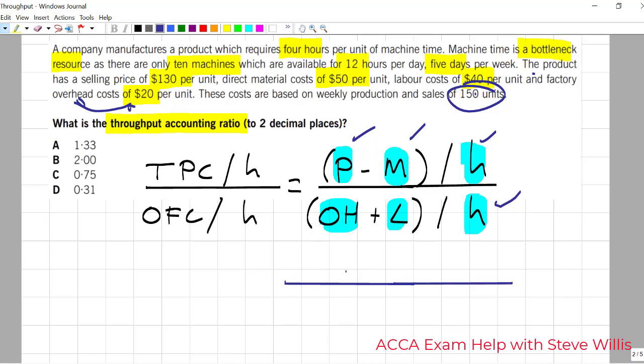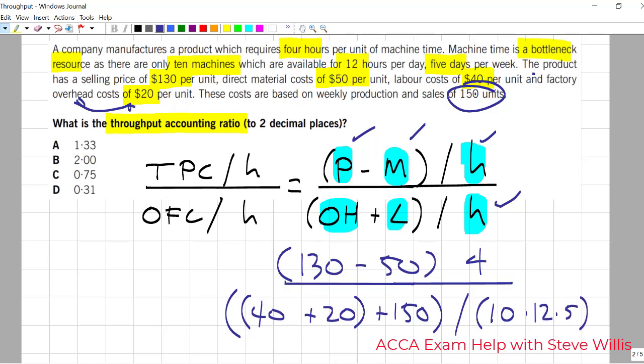So that's going to be what? 130 minus 50 divided by 4 over 40 plus 20. That's the unit level plus 150 units in a week divided by the 10 times the 12 times the 5. That's going to give me the 600 hours in the week. If I do all of that, guys, I will get the correct answer, which is A, 1.33.